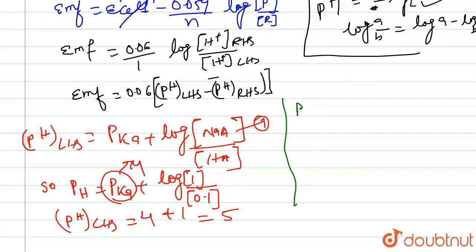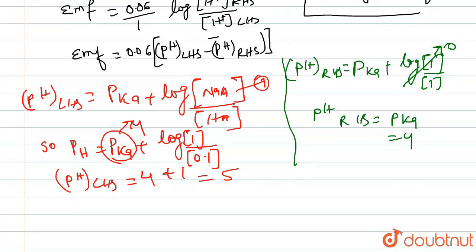Now let us talk about pH of RHS. pH of RHS equals to pKa plus log of 1 upon 1 because the concentration is same on both sides. So pH of RHS, as the log value of 1 equals 0, pH of RHS equals to pKa. The value of pKa is 4.